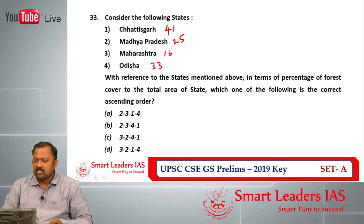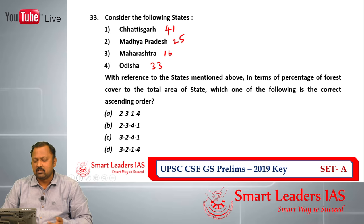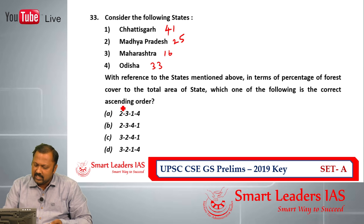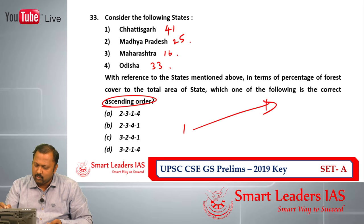Question number 33: consider the following states with reference to percentage of forest cover. Chhattisgarh is close to 41%, Madhya Pradesh 25%, Maharashtra 16%, and Odisha 33%. They are asking for the correct ascending order — low to high. So the order is Maharashtra (3), Madhya Pradesh (2), Odisha (4), Chhattisgarh (1): that is 3, 2, 4, 1. Answer is C. So question 33 answer is C.